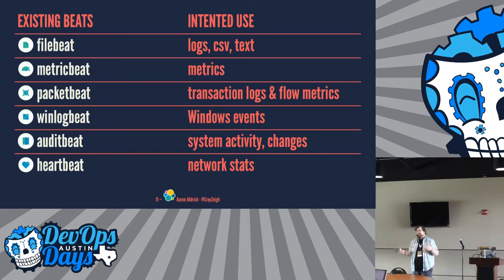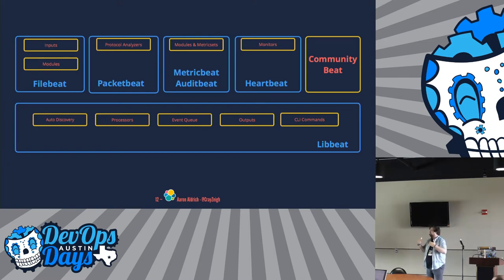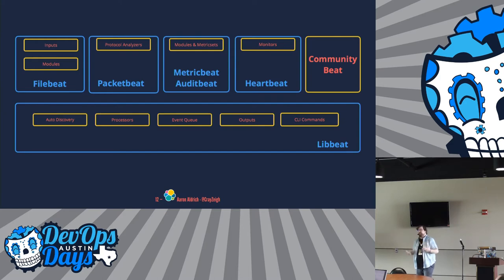Even with all those beat types, we know that people have different systems on the end — they all store data differently or look at it differently or have different types of metrics they want to collect. So the structure of the application was built modular. We have this library underneath called LibBeat, and it has anchor points that can be turned — things like auto-discovery, processors, inputs, and outputs that can be tweaked. All of these different beats have different modules that can be enabled, created, or customized. And we've got people that can contribute community beats, which we'll come back to.